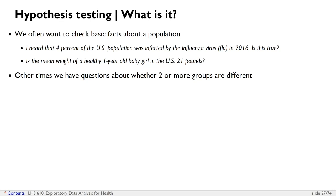As opposed to checking basic facts about a population — where we have one column of data and we're trying to check some aspect of that against a fixed value like 4% or 21 pounds — in the second situation we might have two or more groups, and we want to know whether those groups are similar on some characteristic or if they're different.